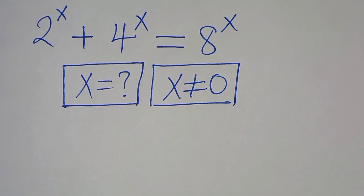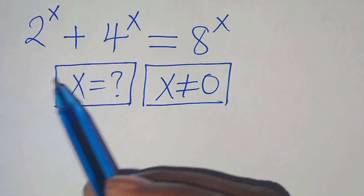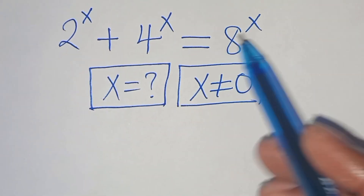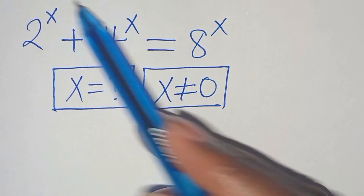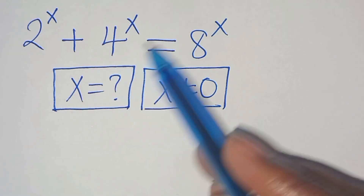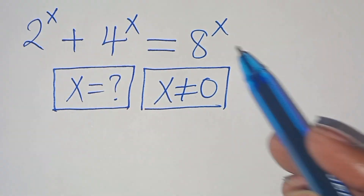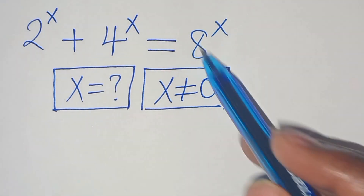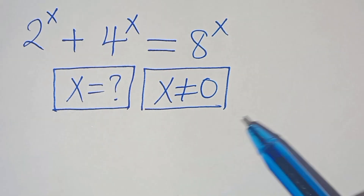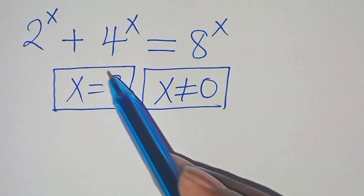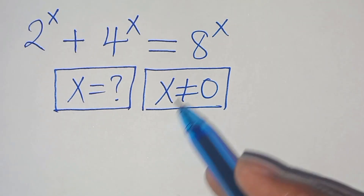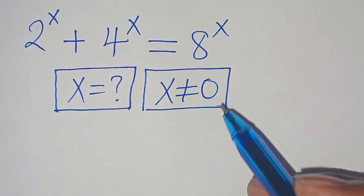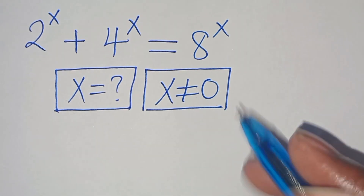Hello everyone, you are welcome to solve this nice algebra problem, which is 2 to the power of x plus 4 to the power of x, this is equal to 8 to the power of x. So what is the value of x, given that x is not equal to 0?